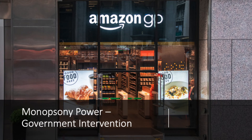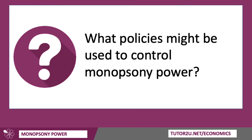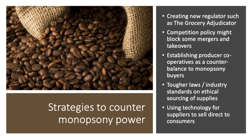What policies and interventions might be used to control the exploitation of monopsony power? Options include creating new regulatory bodies such as the grocery adjudicator, competition policy blocking mergers and takeovers in the supermarket sector, encouraging producer cooperatives as a counterbalance to monopsony power, imposing tougher laws and industry standards on ethical sourcing of supplies, and technology enabling suppliers to sell direct to consumers, cutting out the retail middleman.